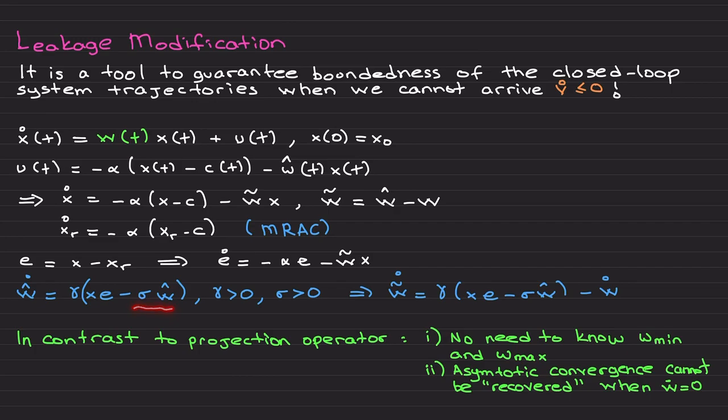For this reason, this is called the leakage term. In some earlier papers, it's also called adaptive control with forgetting factor. People also call it sigma modification, that's why I use the symbol sigma for this leakage term gain.